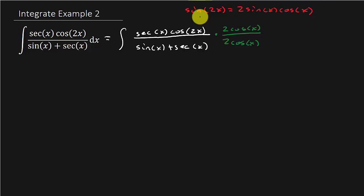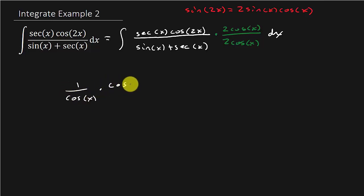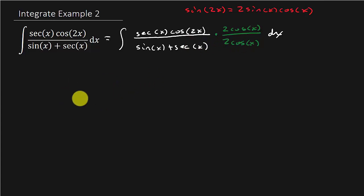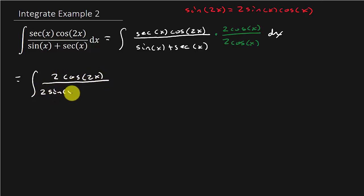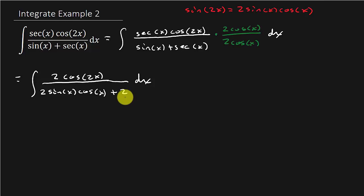And the other good thing about this — let me put the dx there — cosine times secant is 1, right? Because secant is 1 over cosine. If I multiply secant by cosine, that just cancels out. Same thing when I multiply it to the other term. So that's going to give us the integral of 2 cosine 2x over 2 sine x cosine x plus 2 dx, because 2 cosine x times secant x is just 2.